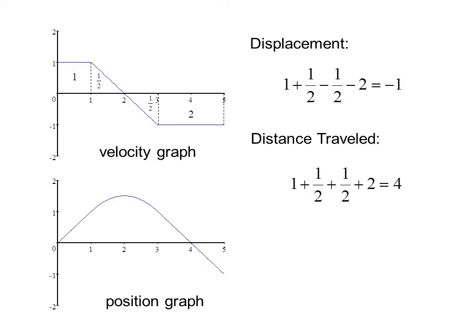If we look at the position graph associated with this velocity graph, for the first unit of time, the velocity is constant, which means the slope of the position graph is constant. Then in the next part of the graph, the velocity is decreasing, which means the slope is decreasing and it's concave down. And finally, in the last part of the graph, the velocity is constant again, so the slope is constant. And here we see the position ends up at negative 1.